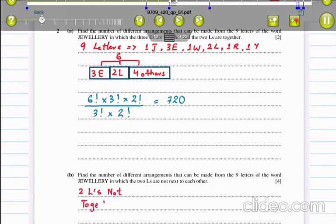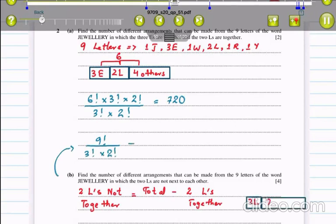And then, for when the 2 L's are not together, we consider treating them as single elements. So we have 8 factorial into 2 factorial.